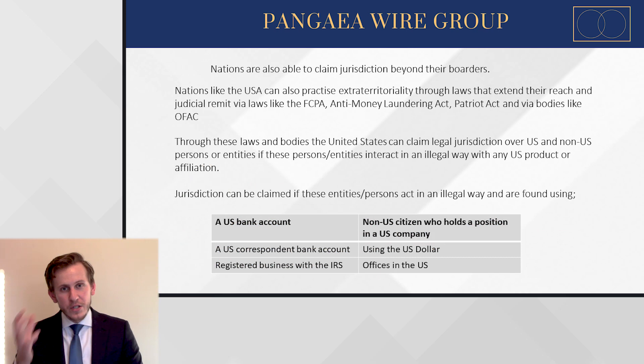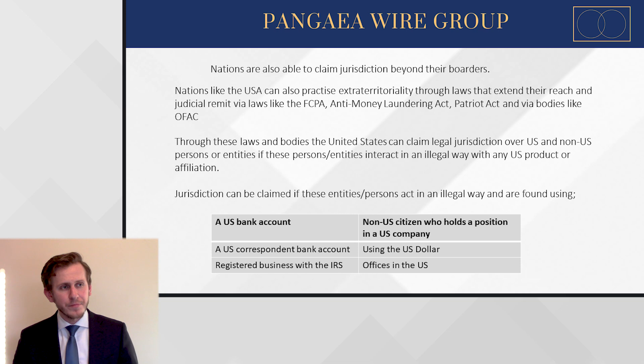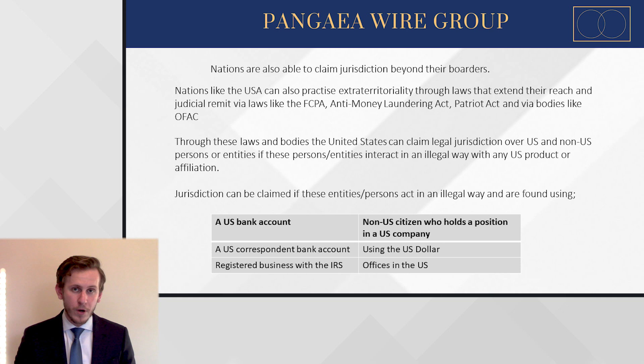As nations develop and their importance grows, they are also able to enact sovereignty in other ways. The term extraterritoriality comes into play here. In the case of the United States — though other nations can do this too — they've enacted laws that allow them to have jurisdiction over even non-US citizens and non-US entities, whether they're charities or companies, if they meet certain criteria. Examples include the Foreign Corrupt Practices Act, the Anti-Money Laundering Act, the Patriot Act, and OFAC, the sanctioning body of the United States.